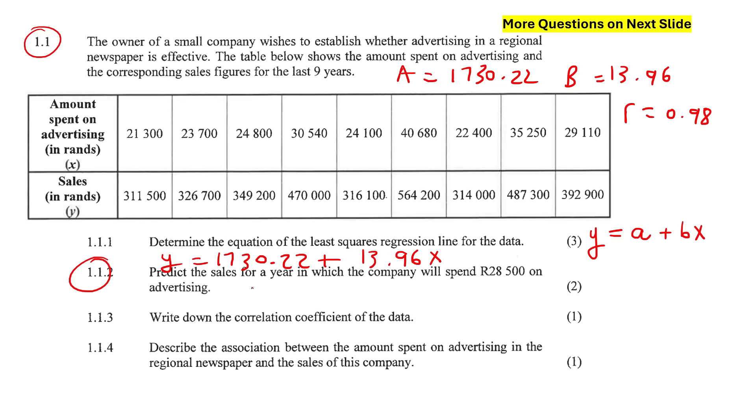This one, predict the sales. So get the y value when the x value is 28,500. Don't use the table. Now you have an equation. So we know that the x value, because that's your advertising spend, then we can just use this equation to work that out. So y equals 1730.22 plus 13.96, and the x value is 28,500. And if we calculate that, just put your calculator back into normal operating mode. And that's going to give us 399,590.22 rand.